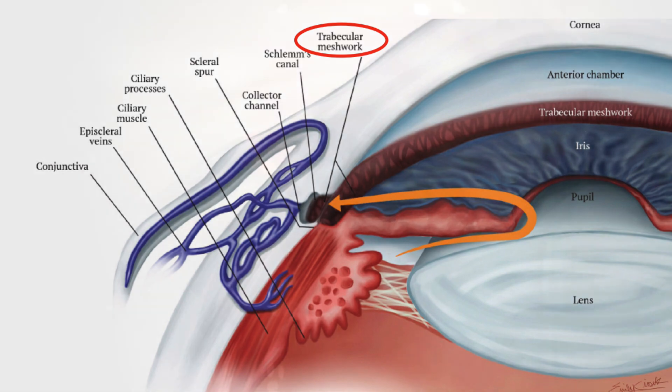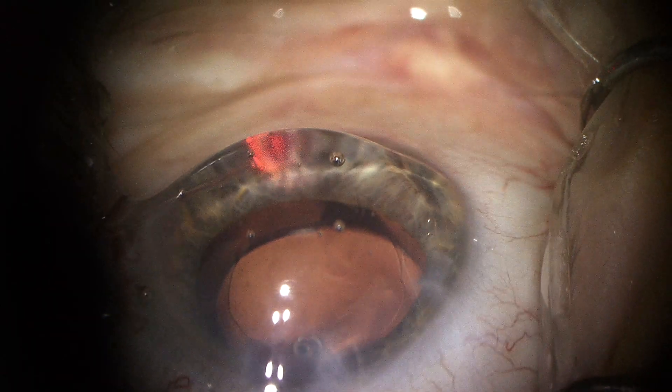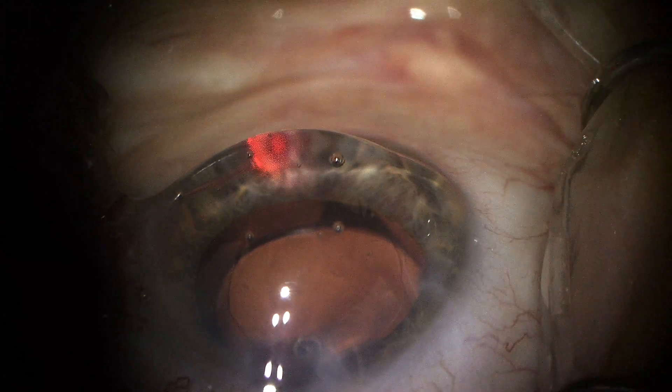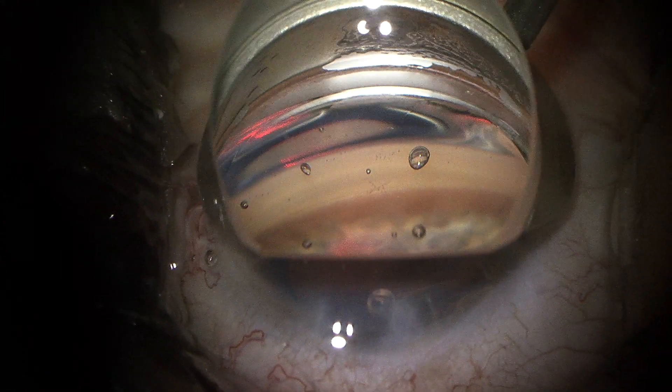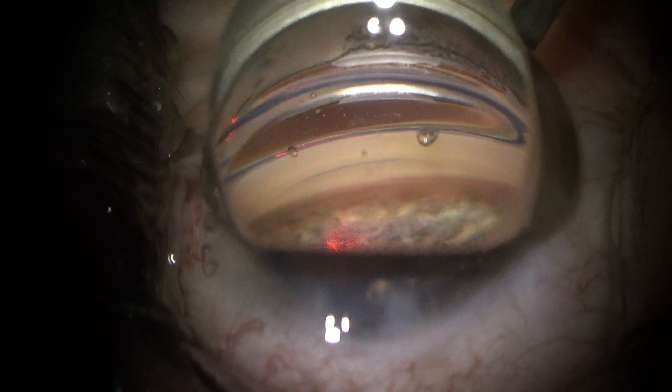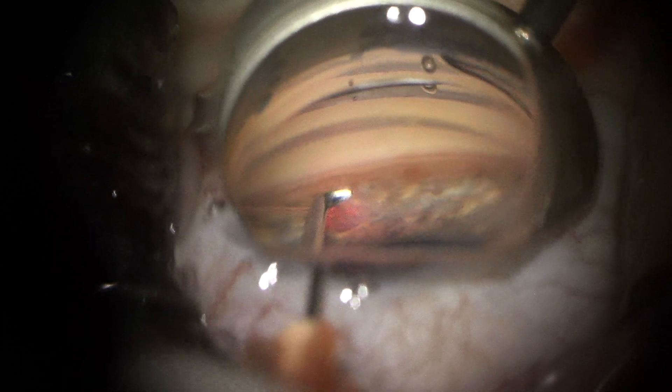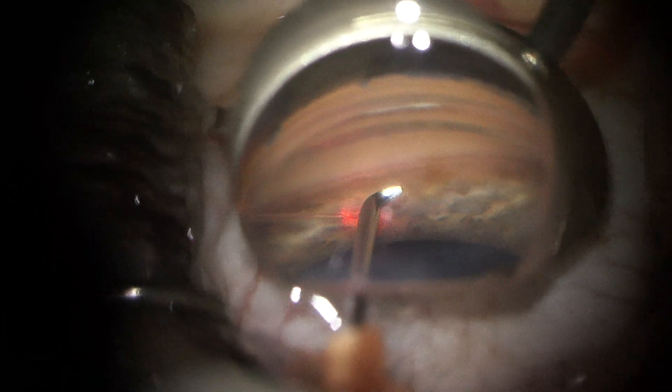Now let's switch from a schematic view to an inside-the-eye view. In this video, I have a lens over the cornea called a gonioprism, and it allows me to see the angle from an internal view. The first step to augmenting or increasing the drainage capacity of the human eye is to make an opening of the trabecular meshwork. This opening is called a goniotomy, and it is made with various different devices and can be made large or small.